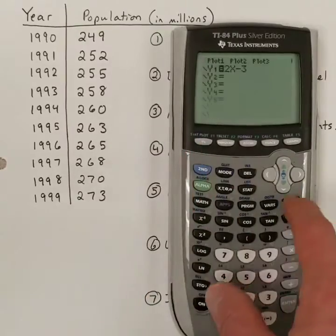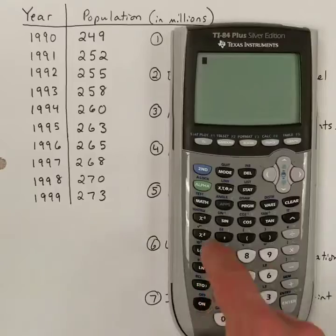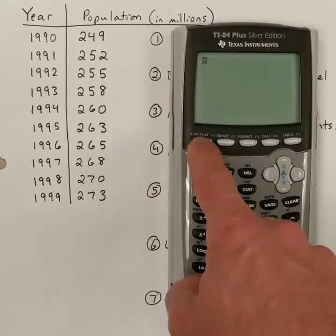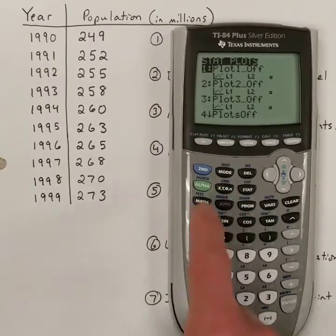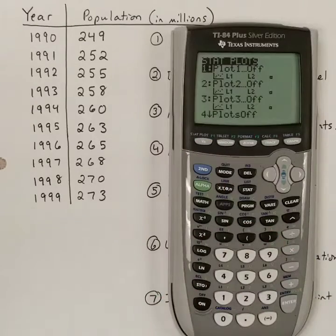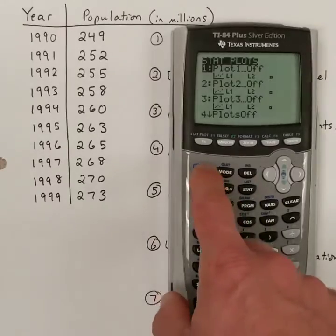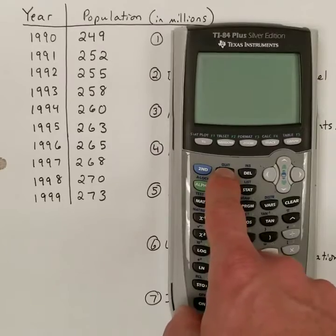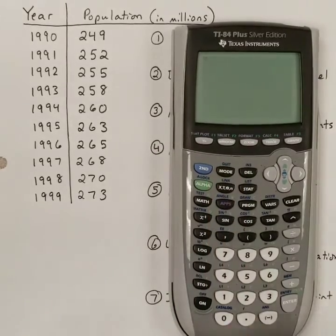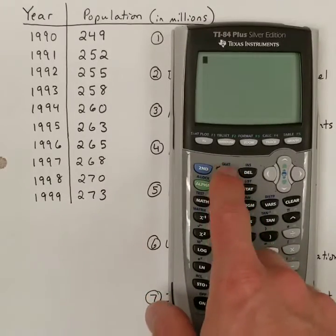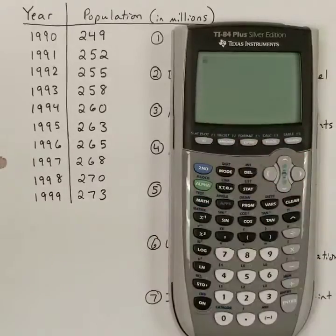I want to delete something out of here. I've got to delete something first. If you hit the second and then the mode button, that will allow you to quit any screen and go back to the home screen. So if you make a mistake like I just did, just hit second and then the mode button to quit and that will take you back to this home screen.